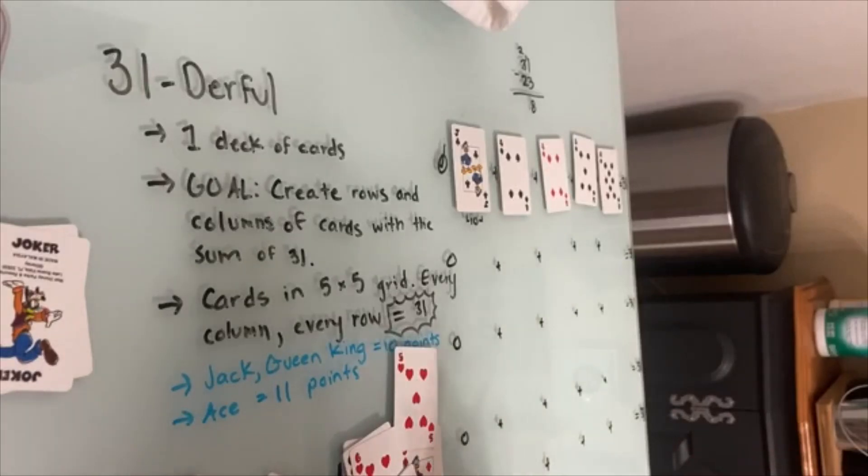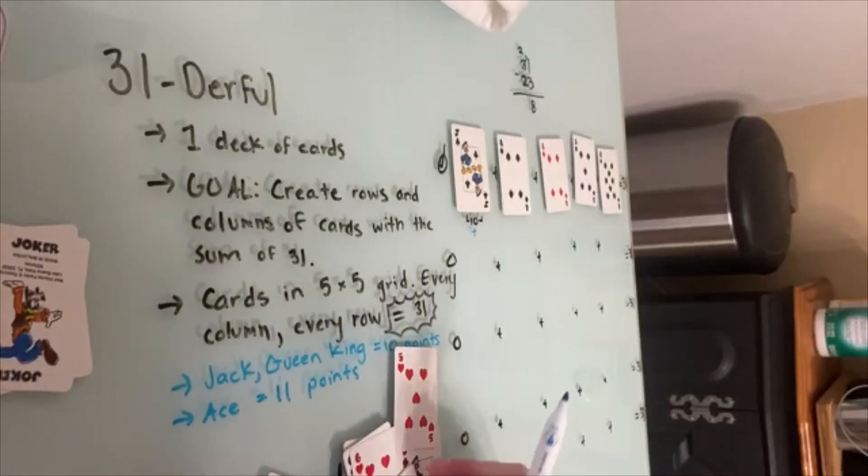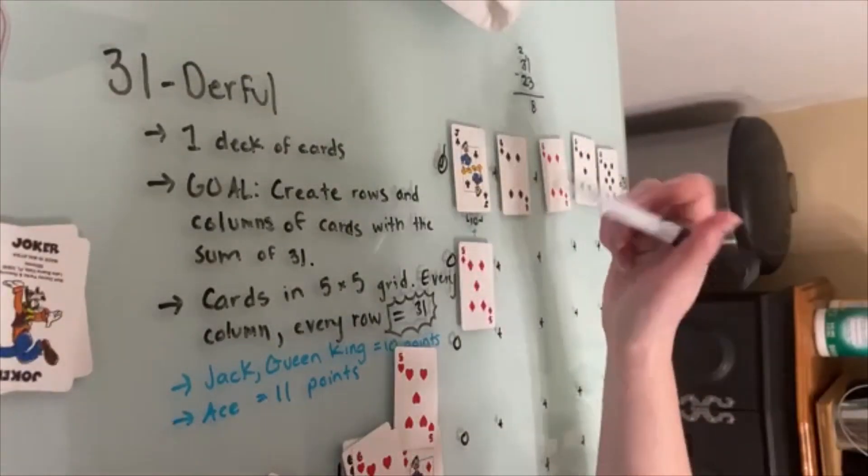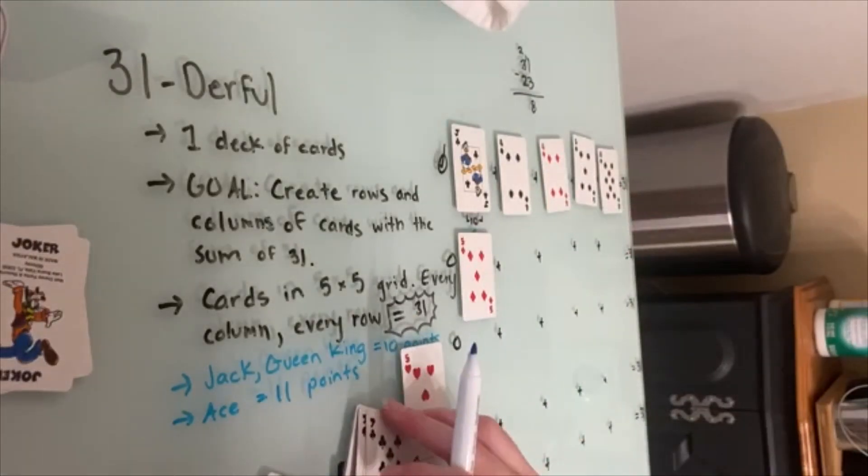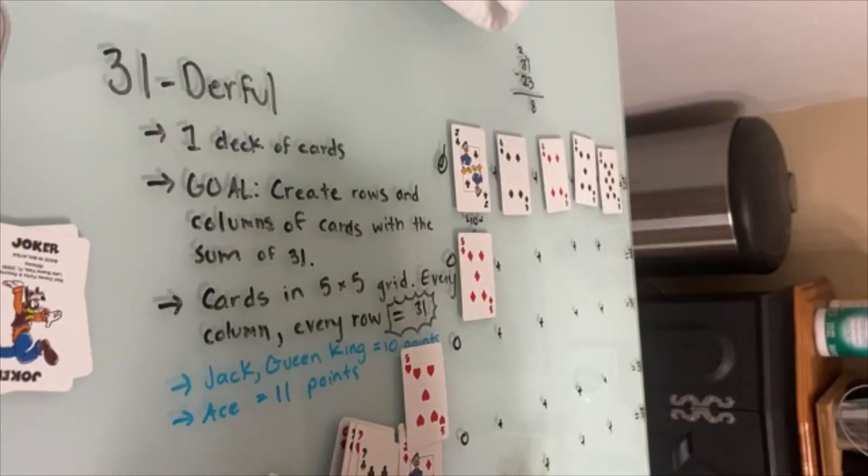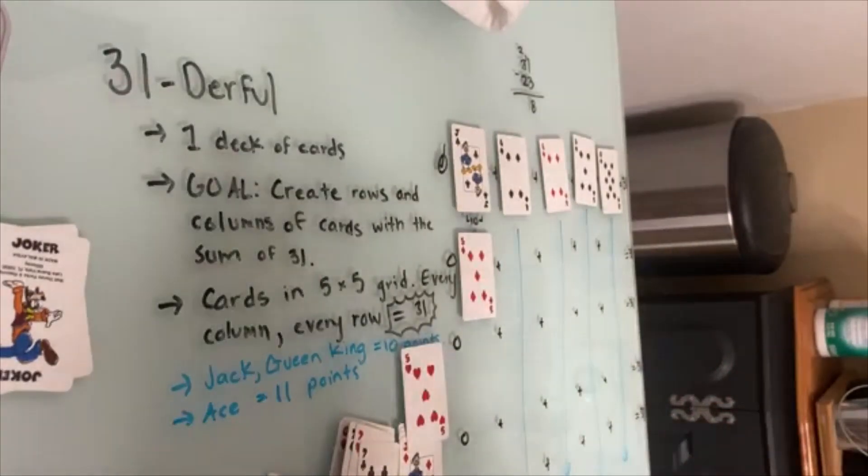But here is the challenge, because we're not done. As I go down, I need jack, which is equal to 10, plus the card beneath it. I'm going to start with 5. So right now I've got 10 plus 5, that's 15. I want a small number so I don't go over 31. Everything going down needs to equal 31. This going down is going to need to equal 31. And that is the big challenge.